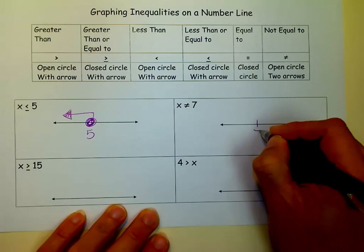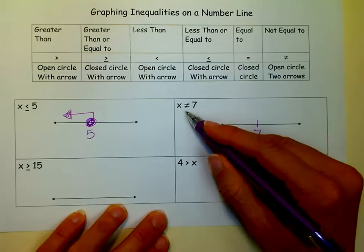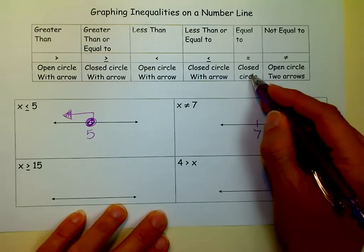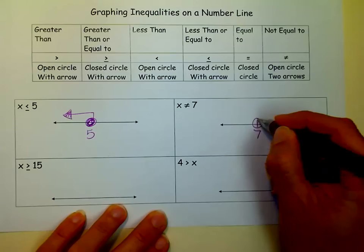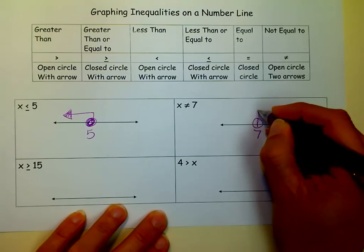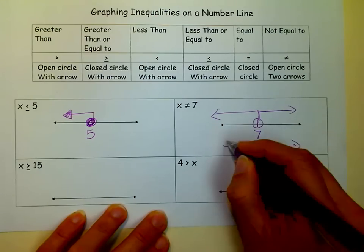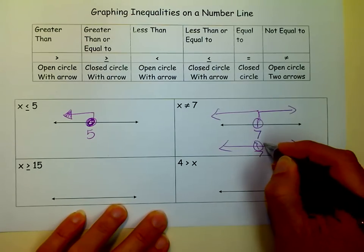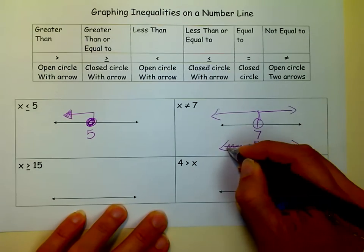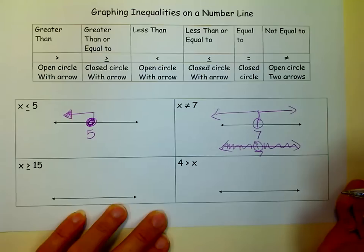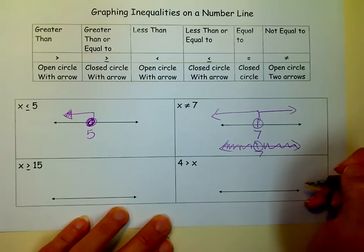So over here, X does not equal 7, so it can be anything except 7. So if I look up here, not equal to means an open circle. And then I go both directions. Some people kind of do it like this, where they do an open circle and then they shade both ways like that. You can do it like that if you want. It depends on what your teacher wants you to do.